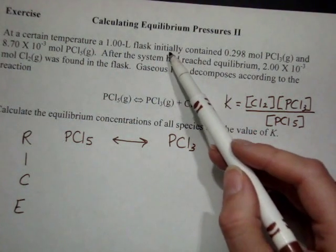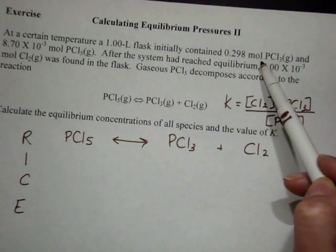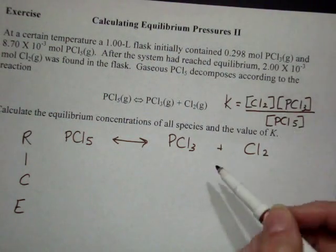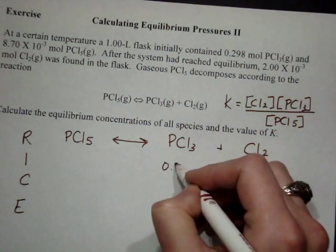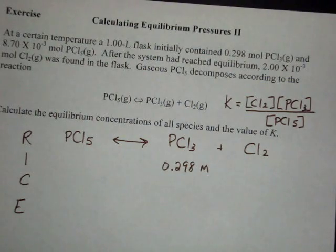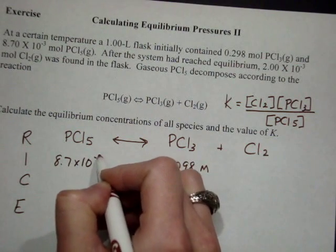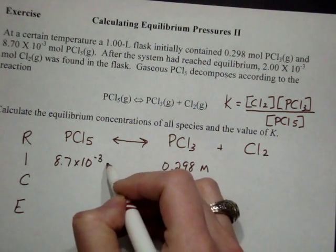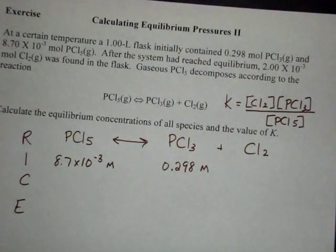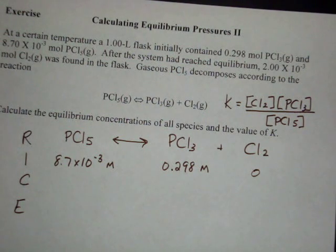Then I go back to my initial information. Flask initially contained 0.298 moles of PCl3, and that's in 1 liter. So that means I have 0.298 molar PCl3 and 8.7 times 10 to the negative third moles per 1 liter of PCl5. So what I have here is two initial concentrations. It does not say that I have any Cl2, so I can make the assumption at that point that this is 0.